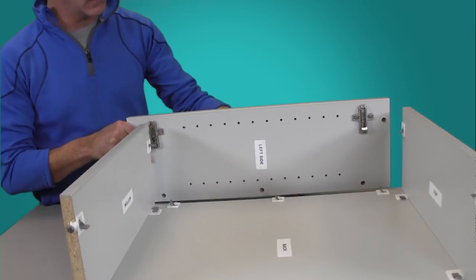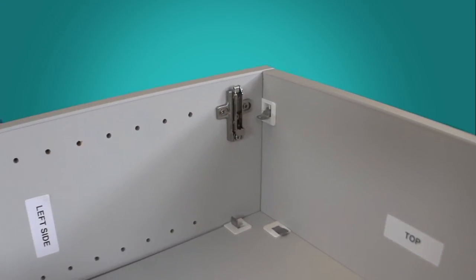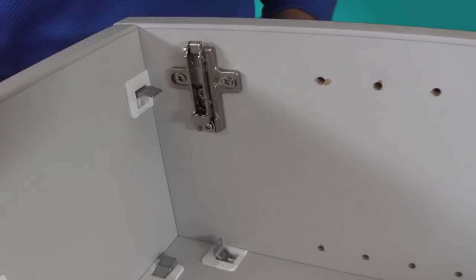Attach the left side by aligning the pre-drilled holes with the connection fittings in the back, top, and bottom panels. Push the panels together and press the fitting toggles down to secure.